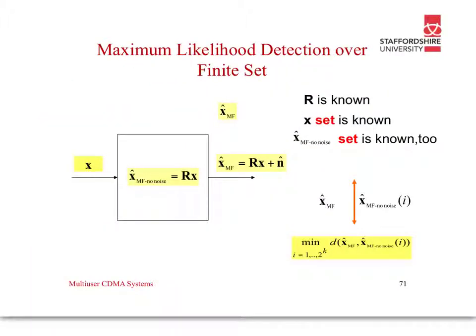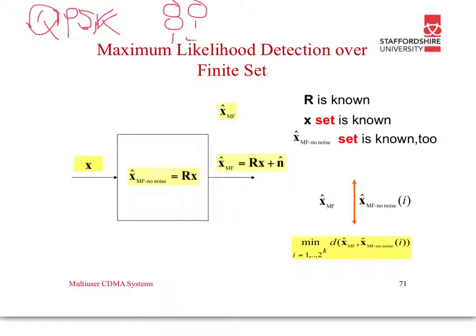For maximum likelihood detection over a finite set, take QPSK as an example — we have four symbols: 00, 01, 10, 11. We have our input X, our matched filter with no noise, and then our received signal equals X plus noise. R is known, the symbol set X is known, and X with no noise is also known. We look at the minimum difference between what we receive and what X would be without any noise.